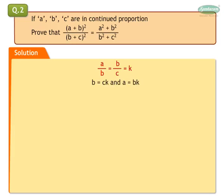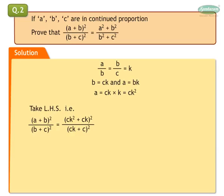We substitute B is equal to CK and get A is equal to CK square. We now take the left hand side and write all terms in terms of C and K. (A plus B) whole square upon (B plus C) whole square is equal to (CK square plus CK) whole square upon (CK plus C) whole square. We get CK common in the numerator, separated out, followed by (K plus 1) in bracket, and C common in the denominator, followed by (K plus 1) in bracket. We then close the brackets and write the squares. We simplify to get left hand side equal to K square.